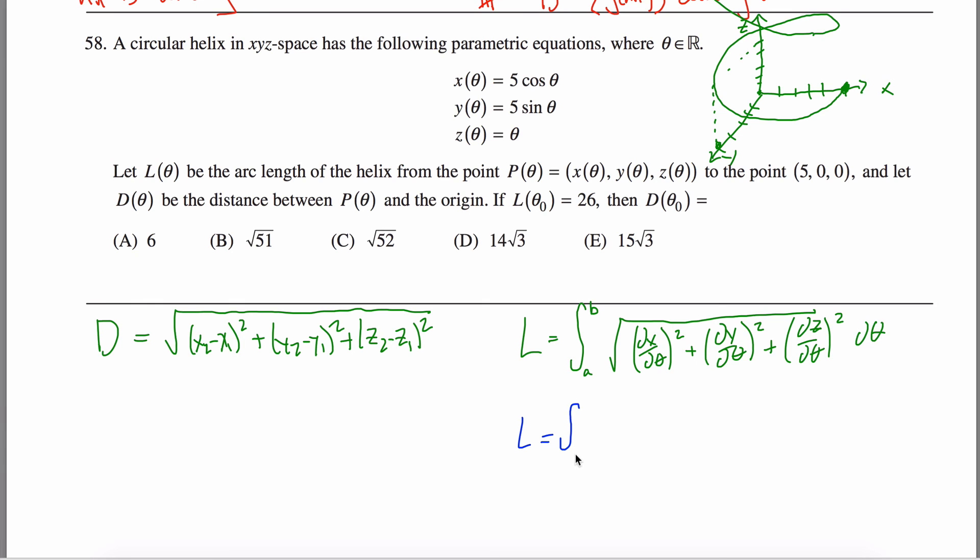My arc length is equal to my starting spot is when theta equals zero, because when theta equals zero, I'm at this point, five, zero, zero. And my ending spot, I don't know, maybe I'll call that theta naught. So I'm going from zero to theta naught. What I'm going to write is L of theta naught equals 26. So I'm saying that 26 must be equal to the integral from zero to theta naught of the square root of dx d theta squared. dx d theta is the derivative of this guy right here. The derivative of cosine is negative sine. So I get negative five sine of theta squared. Now the derivative of five sine squared, same idea, except now the derivative is five cosine there squared, five cosine theta squared. And the derivative of theta with respect to theta is just the number one.